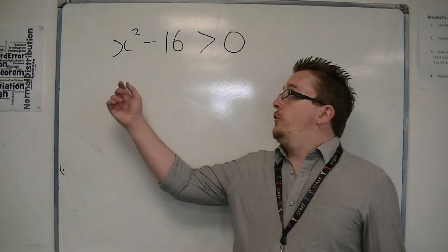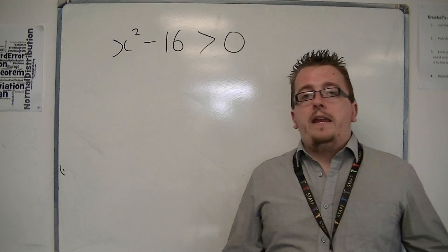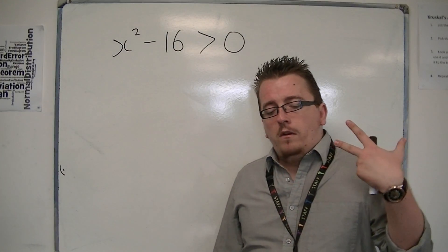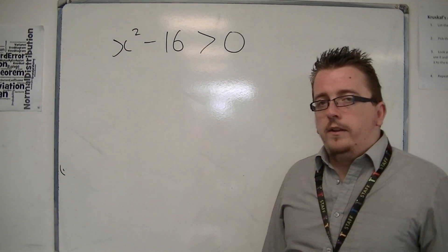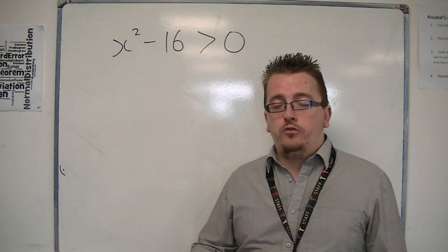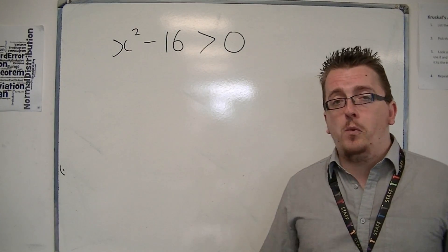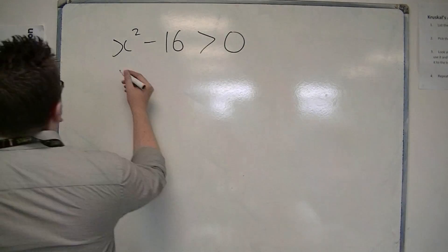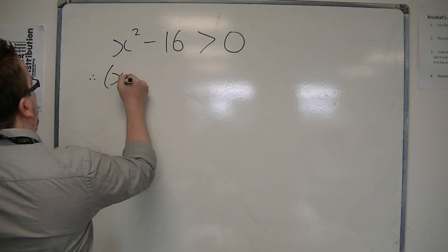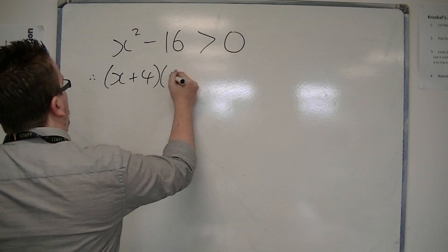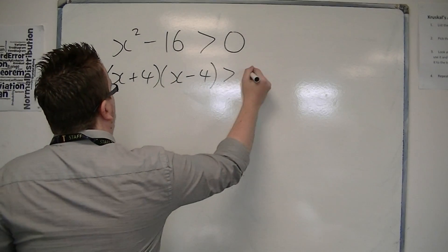Now, x squared minus 16 is a quadratic that you can factorize because it's the difference of two squares. So, we can write this as x plus 4, x minus 4 is greater than 0.